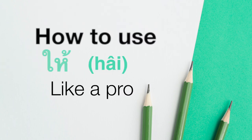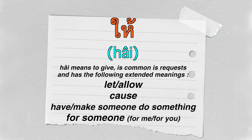Hi guys, today we are going to learn how to use ให้ (hai) in different ways. You guys probably already know that hai means 'to give,' but it doesn't mean only gift. Hai also means let, allow, cause, have, or make someone do something.